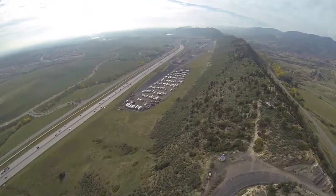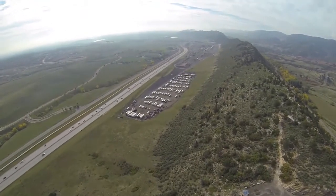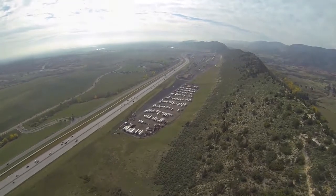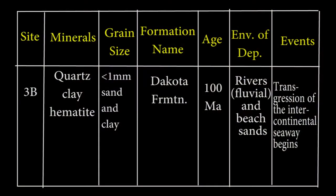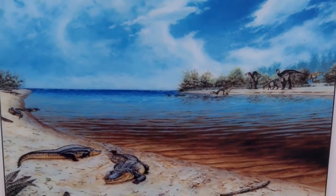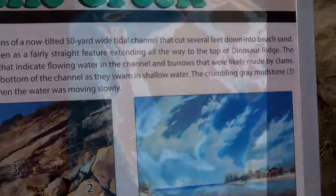There is another vegetation break at the bottom of this slope, which lets us know we are leaving the Dakota Formation and entering the next formation, the Benton Shale. On our charts, 3B is the Dakota Sandstone, the principal resistant unit making up the Dakota Hogback. Its minerals are quartz in the grains and cement, making this formation hard and resistant to erosion. Some hematite is present as cement, and at the top we see more and more clay as well. The grain size is all one millimeter or less. The age for this site can be given as 100 million years ago, though it ranges from 108 to 94 million years ago. The environment is a beach, and the event is the transgression of the intercontinental sea from the north.